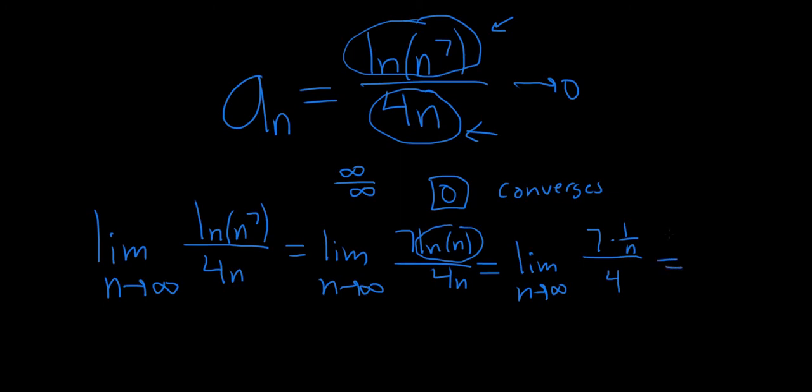So this is equal to, now we take the limit. This piece here is 0, so you get 7 times 0 over 4. The whole thing is just 0, so the answer is the same.